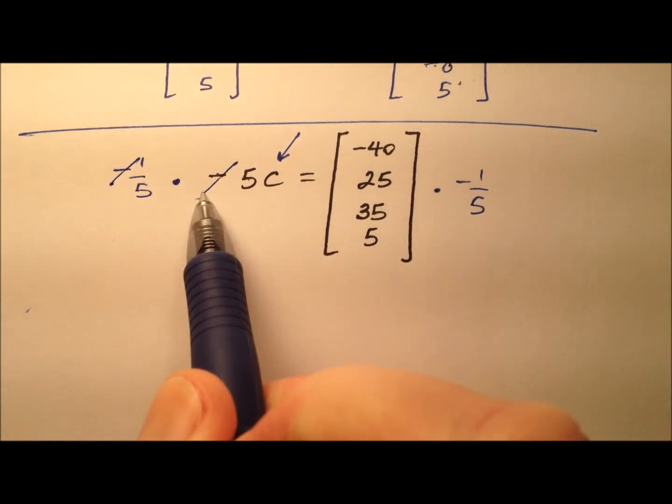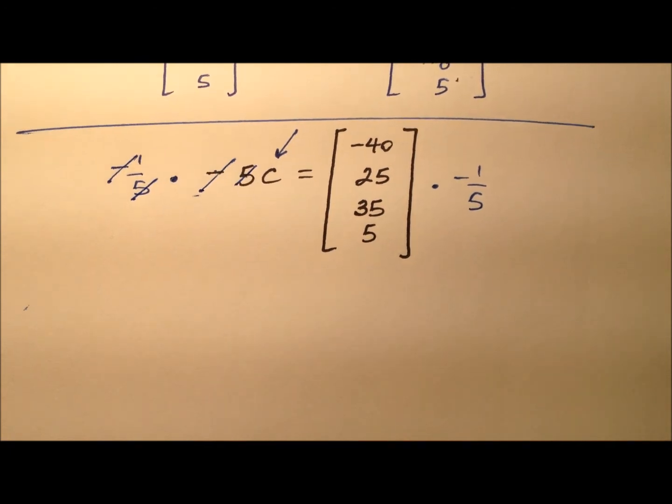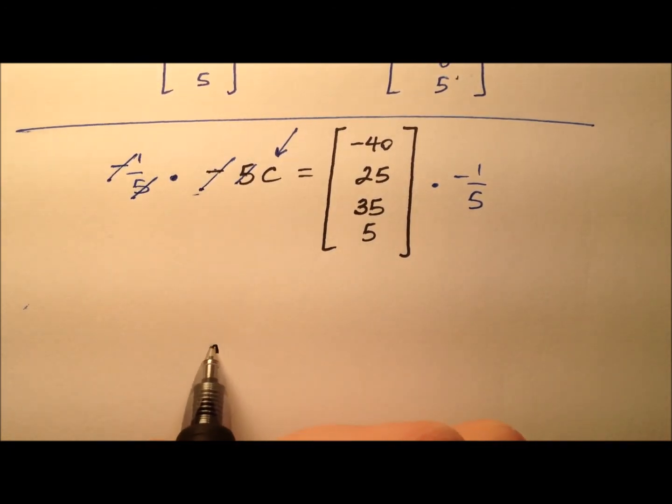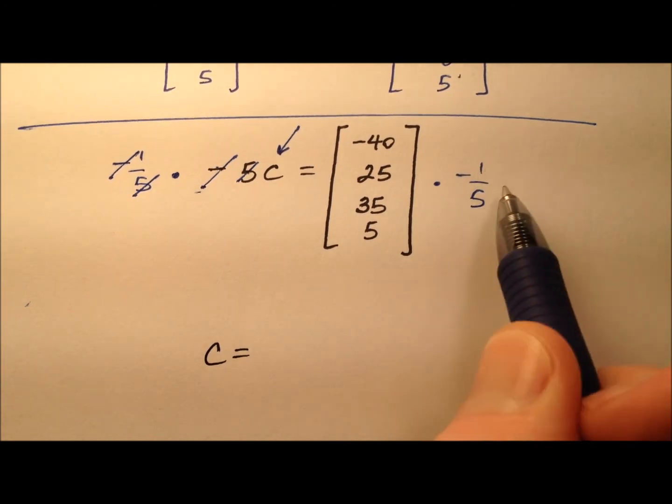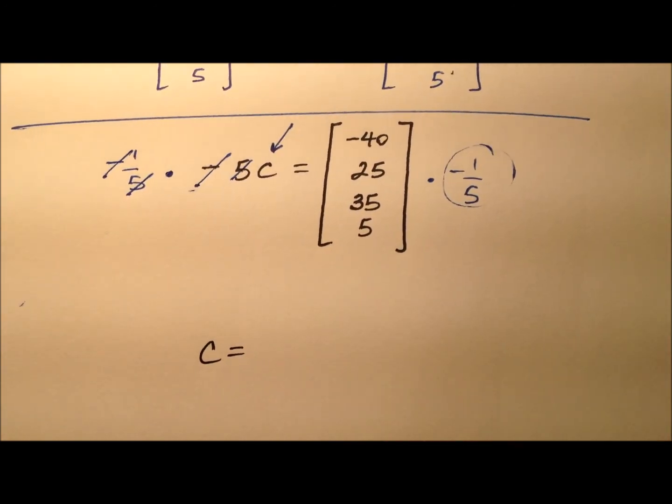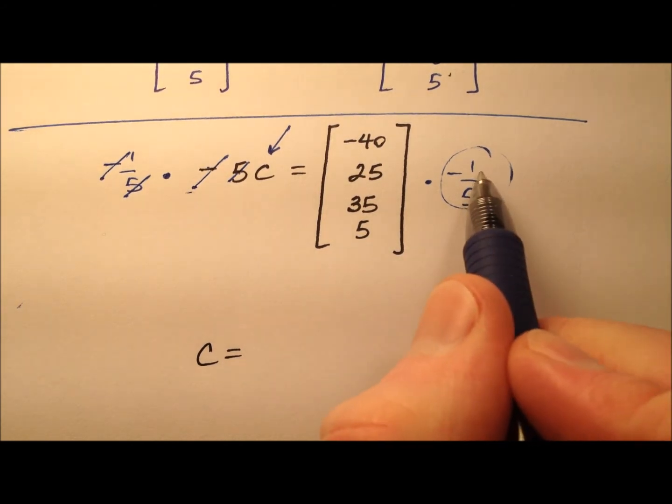When we do that, on the left, these negatives cancel, the 5s cancel, and I will have C all by itself. Matrix C equals, and the negative 1 fifth here is basically just going to be a scalar product.